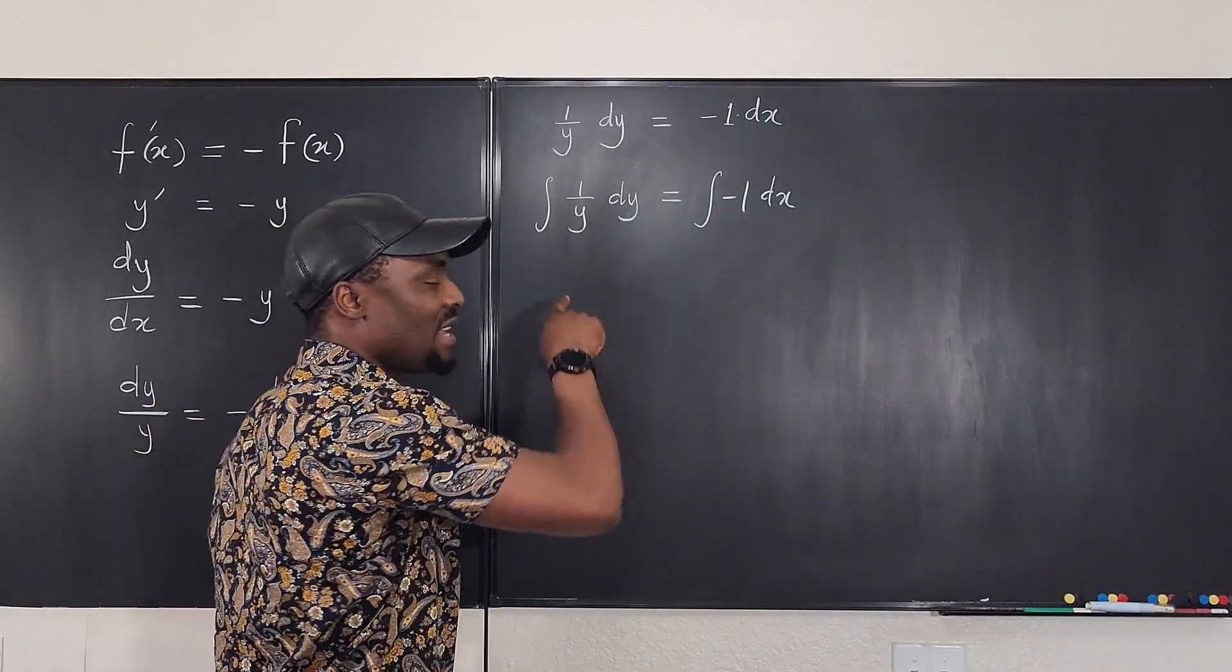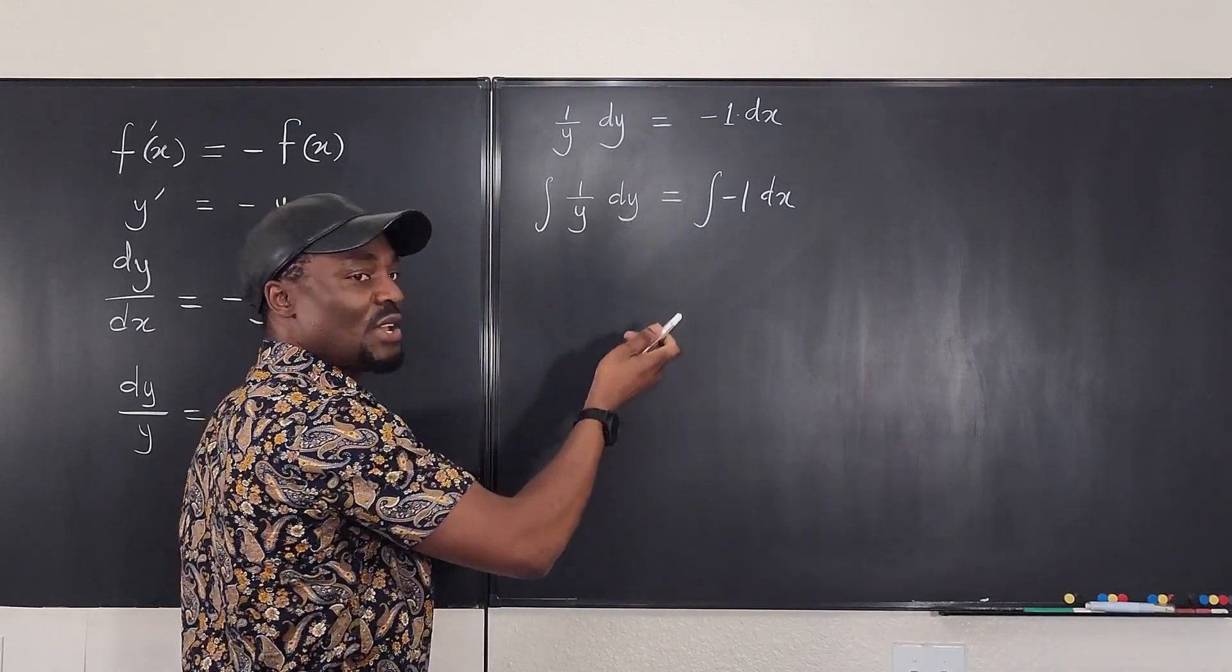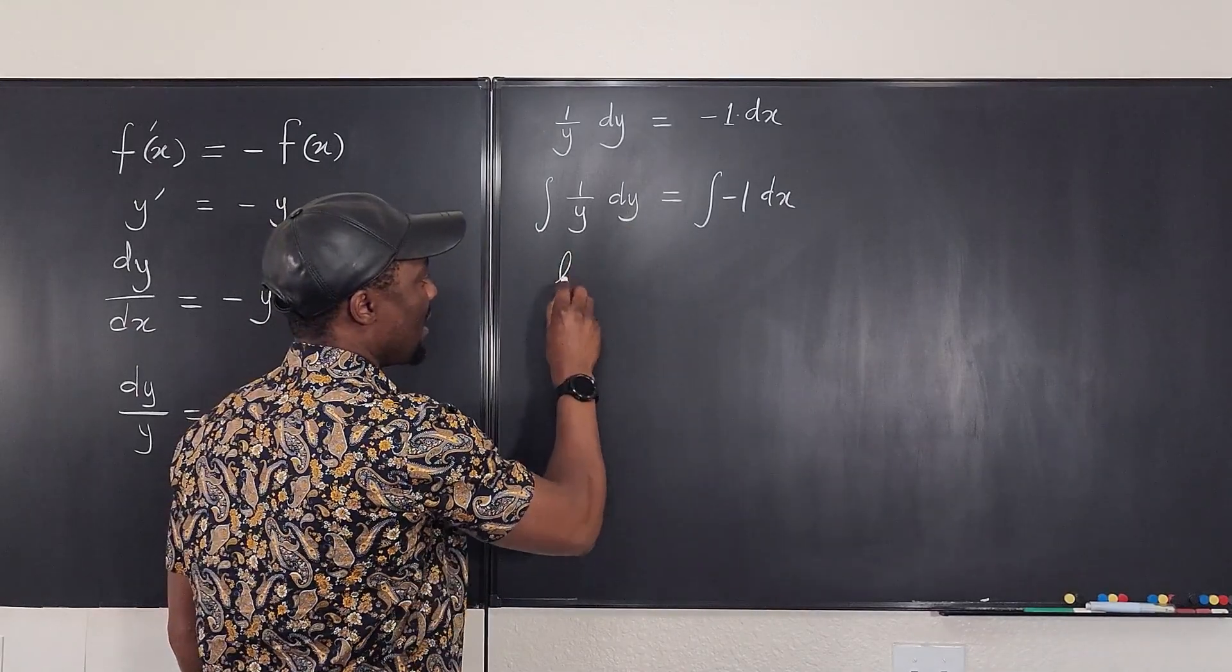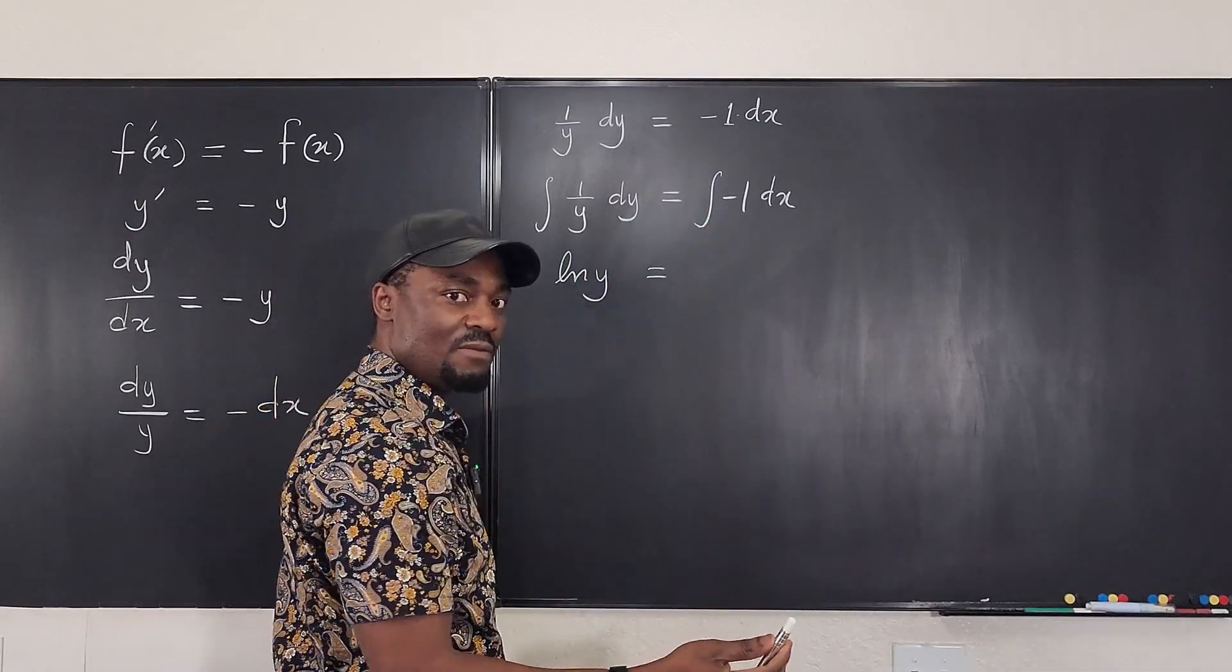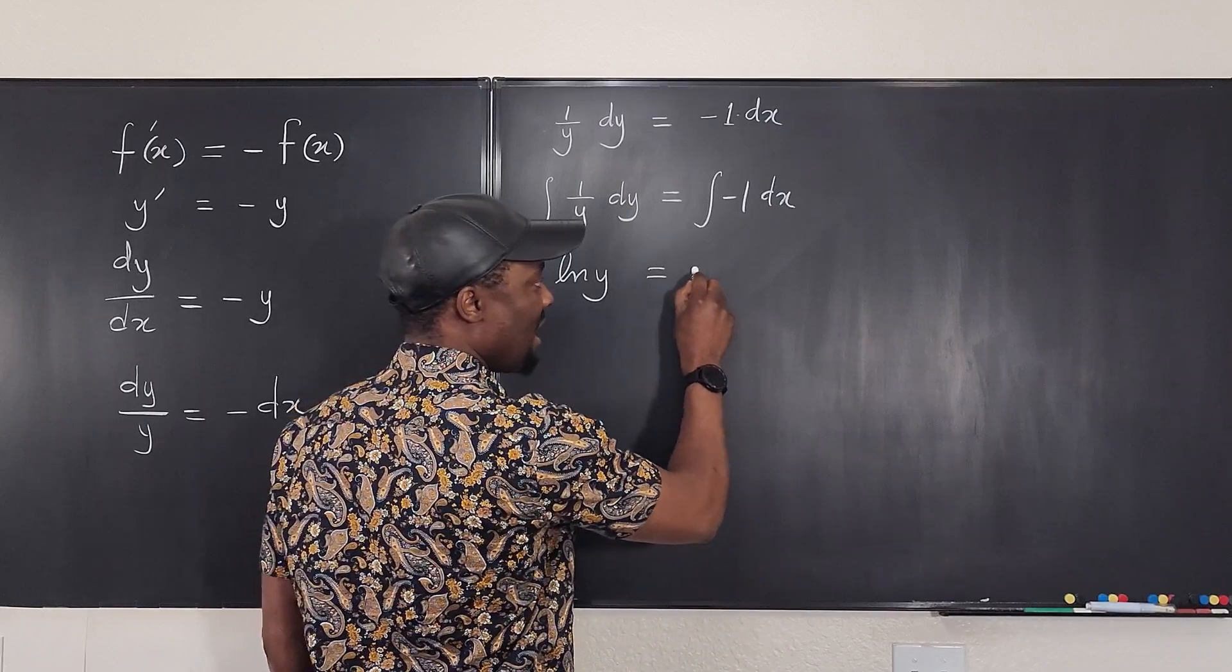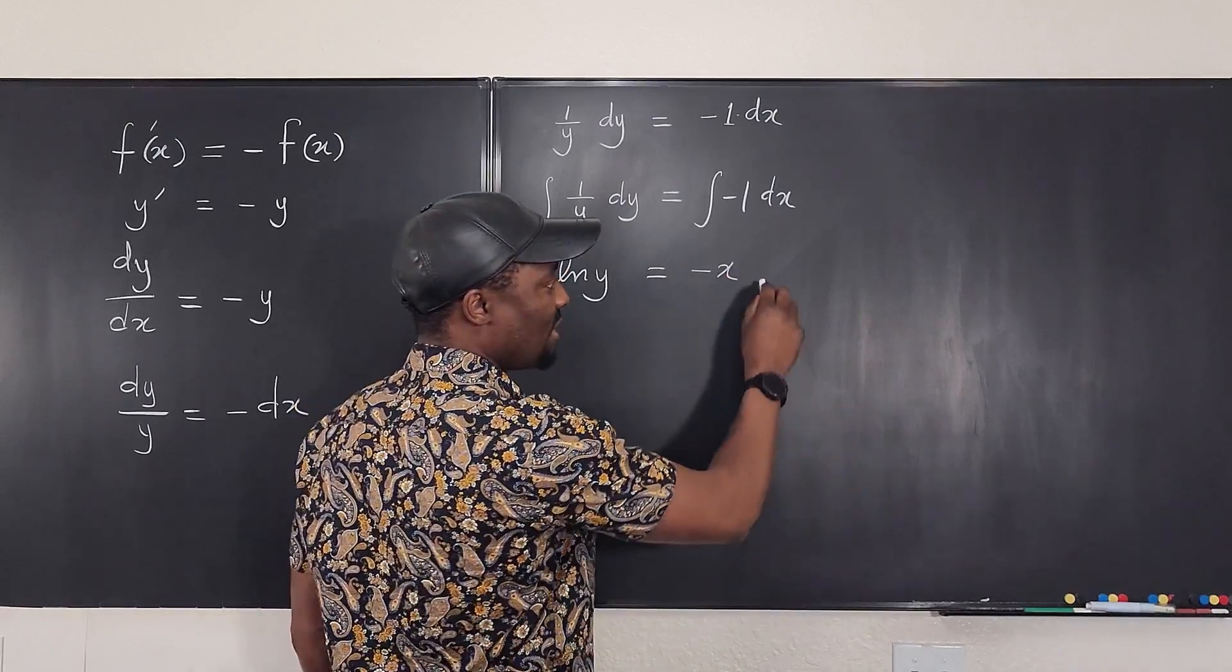If we integrate this, what do we get with respect to y? What do you get? You get natural log of y. That's it. If you integrate negative one, you get negative x. And then we can say plus c.